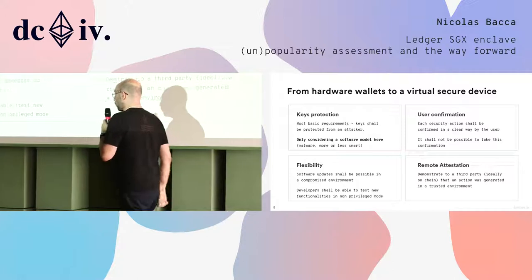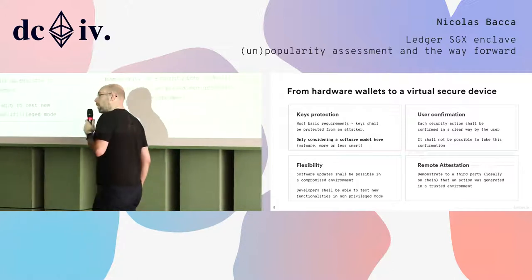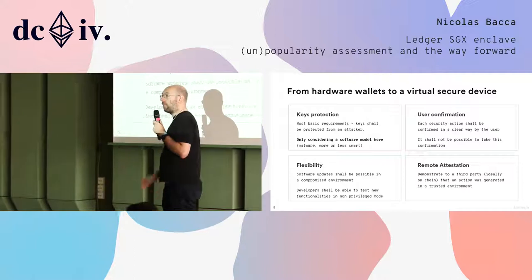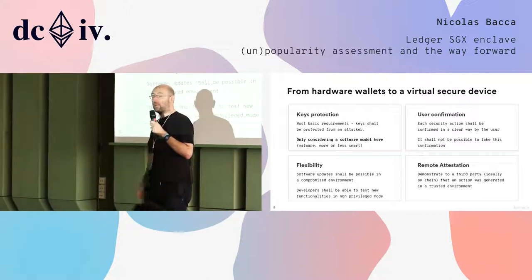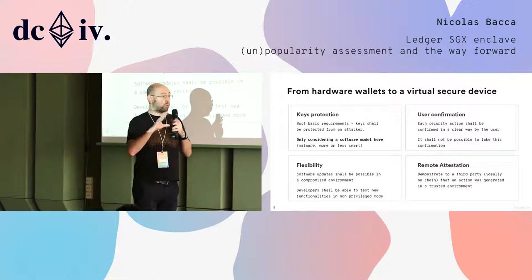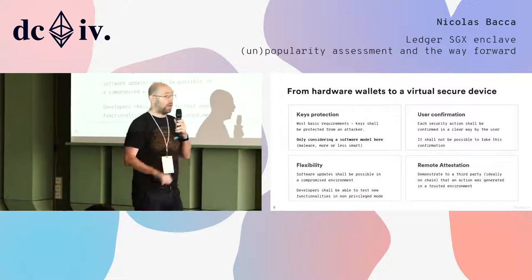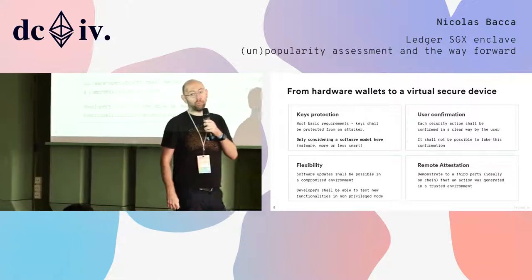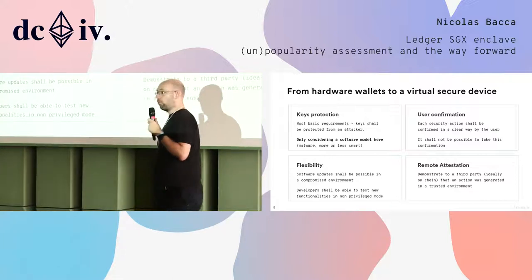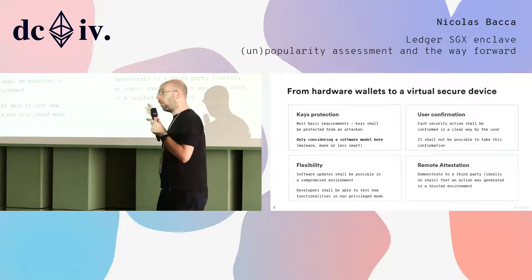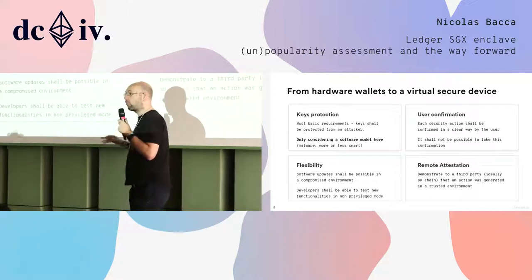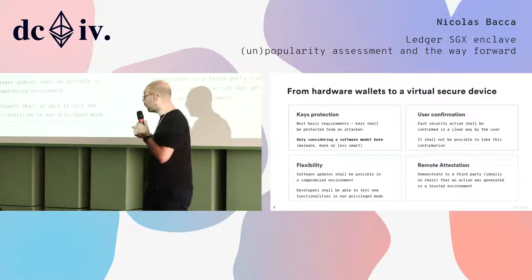User confirmation is extremely important as well. If your enclave is holding keys but an attacker or malware can sign anything, it's not very secure. You should be able to confirm what you are doing, and it shouldn't be possible to fake this confirmation if you're under malware. Then flexibility — you should be able to do software updates on your hardware wallet or enclave at any time, even if your computer is compromised.